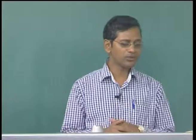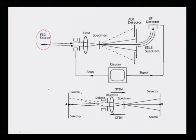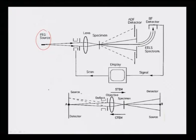A 1 nm FEG beam has a current of about 0.5 nanoamps. That is why with a FEG, bright-field and dark-field images can be easily recorded within a few seconds, or even at TV scan rate — which is what we want: the beam scanning the sample and the image displayed at the same scan rate. To achieve TV scan rate, you need sufficient beam intensity.